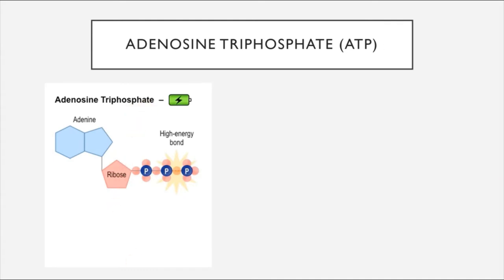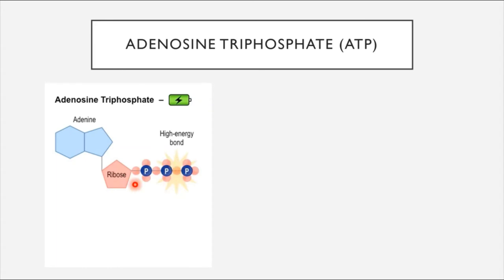A phosphate group is a molecular component that has a negative charge associated with it. In the molecule of ATP, we have three phosphate groups that are directly adjacent to each other. Three phosphate groups with three negative charges do not like to be directly adjacent to each other—in fact they repulse each other very strongly, kind of like if you take the north pole of a magnet and try to force it against the north pole of another magnet. You can physically feel the repulsion those two magnets have for each other.